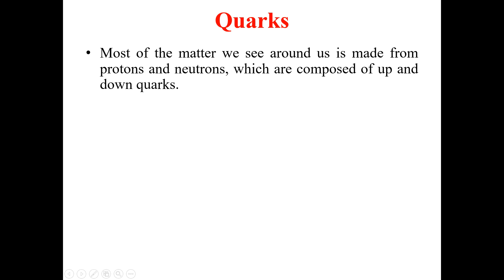Most of you know that the matter we see around us is made from protons and neutrons. The question is: what are the particles from which protons and neutrons are made? The answer is that there are further, smaller particles whose combinations make up protons and neutrons. Those particles we call quarks.